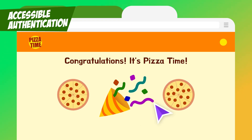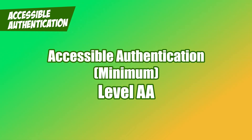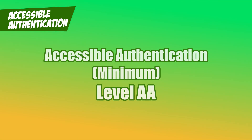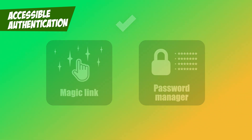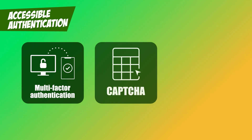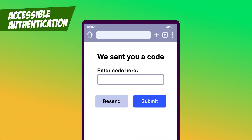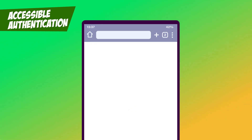That's the beauty of Accessible Authentication. At the minimum level, the success criterion ensures that users don't have to rely on memory or tricky cognitive tasks like solving math equations to log in. Options like magic links or password managers are great for everyone. But there are still challenges — multi-factor authentication, CAPTCHA, and transcription can still trip people up. On the plus side, devices like smartphones are getting even better at making these accessible. My phone recognizes codes from emails and text messages automatically, making the process smoother than ever.